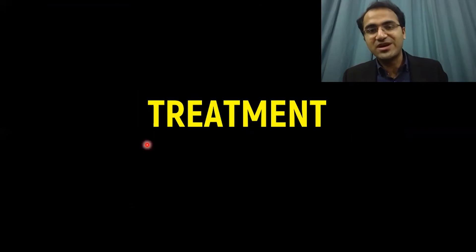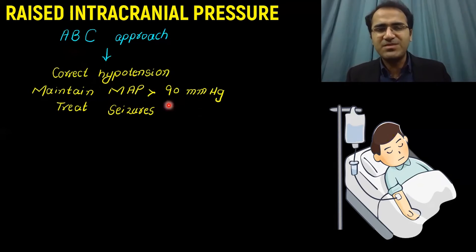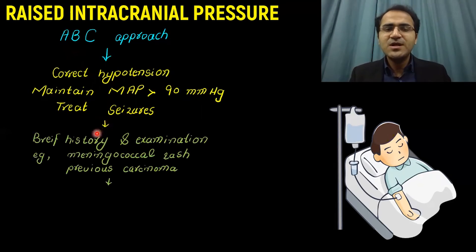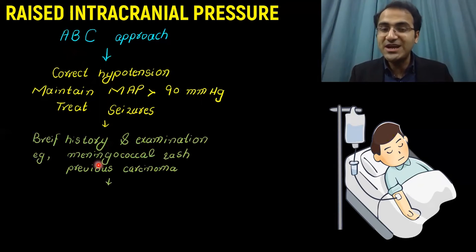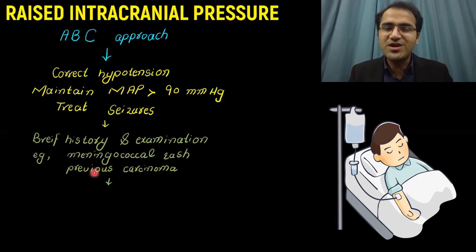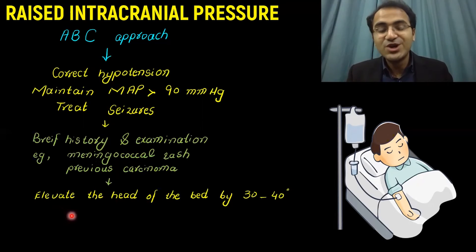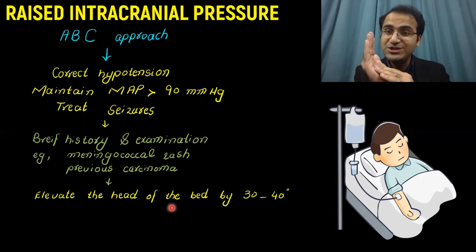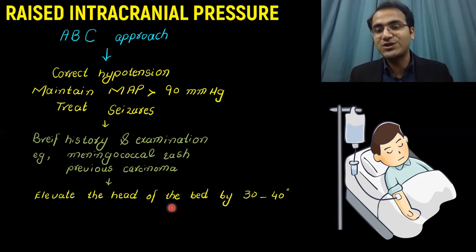Treatment of raised intracranial pressure begins with the ABC approach — airway, breathing, circulation. Correct hypotension and maintain mean arterial pressure above 90 mmHg. Treat any seizures. Take a brief history and examination: look for chronic illness, history of tumor, infection, meningococcal rash, or previous carcinoma that may have metastasized to the brain. A very important step is to elevate the head of the patient, which reduces cerebral blood flow via gravity and effectively lowers intracranial pressure.